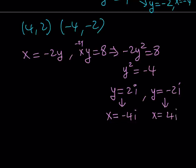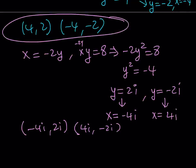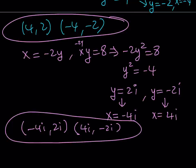So this gives us another two or another set of ordered pairs. I guess that will be negative 4i comma 2i, and 4i comma negative 2i. We got these real solutions here and we got these complex solutions here that are non-real. And if you put it all together and write our solution set to this equation.